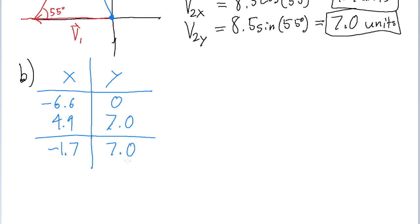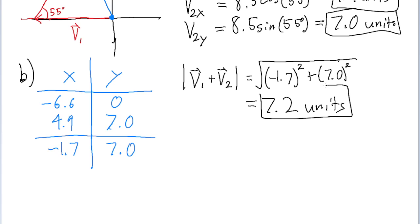To find the magnitude and direction of this vector, we'll apply the typical process. For the magnitude of this sum, we take the square root of the sum of the squares of the components. That's the square root of negative 1.7 squared plus 7 squared. Putting that into a calculator, we get a magnitude of about 7.2 units.